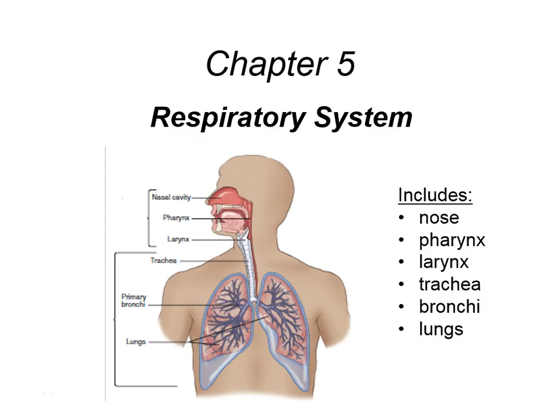We are now in the final unit of medical terminology, which covers chapter 5, chapter 10, and chapter 16. Chapter 5 is the respiratory system, chapter 10 is a combination of cardiovascular, immune, and lymphatic systems, and chapter 16 is the endocrine system. The respiratory system includes everything from your nose all the way down to your lungs.